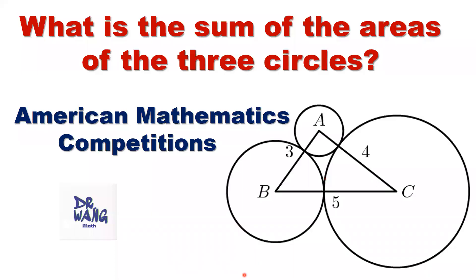Hello, I'm Dr. Wen. Here is the question. We have a 3, 4, 5 right triangle. Vertices are centers of three circles. What is the sum of the areas of these three circles?